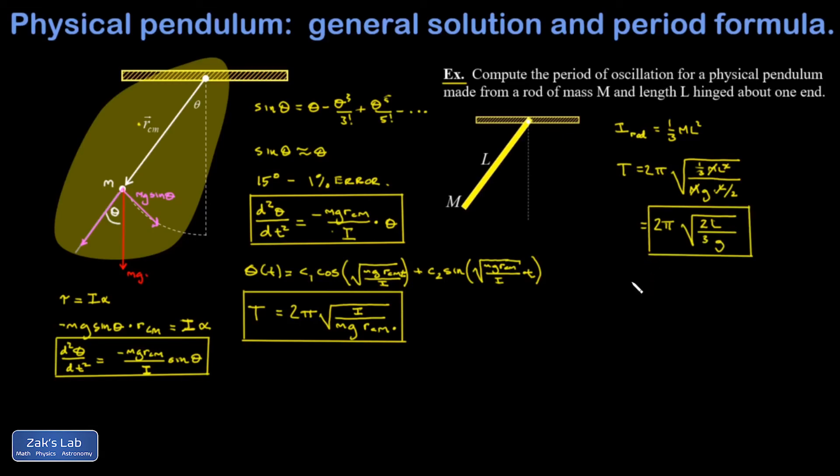So if I compare this result to a simple pendulum that has the same length as the rod, I can see that this rod is going to oscillate more quickly. And when you run the numbers, its period is only about 82% of what the period of the simple pendulum would have been.